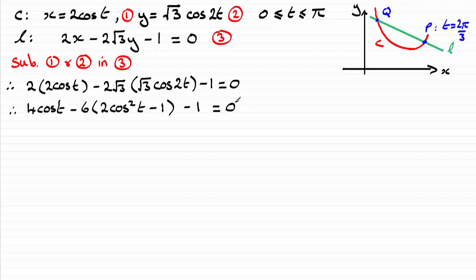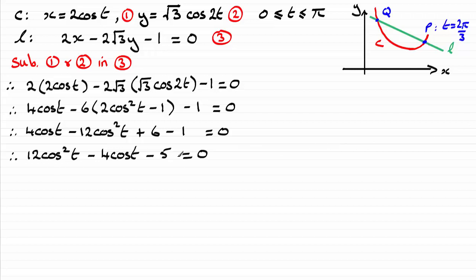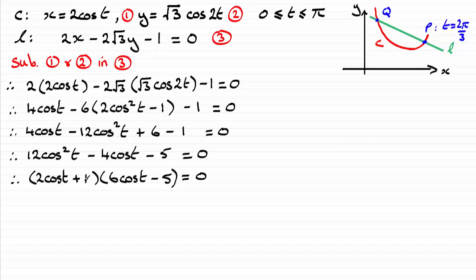Expanding fully, we get a result heading towards a quadratic equation. Multiplying through by negative 1 to make the leading term positive gives a quadratic in cos t. This can be factorised. From the factorisation, either cos t equals negative 1 half or cos t equals 5 sixths.